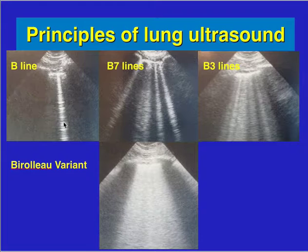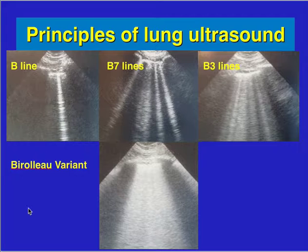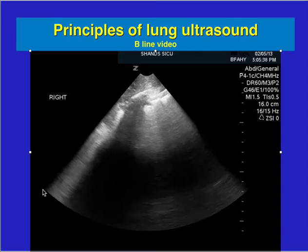Here are some signs of B lines: one B line, a few B lines, many B lines, and a massive whiteout pattern. You can actually monitor your treatment — whether positive pressure ventilation, diuretics, or vasodilators — and see these B lines decrease. I recommend doing that to confirm what B lines actually look like.